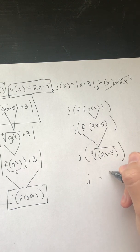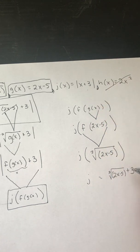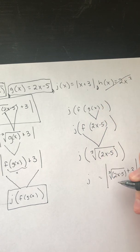it's gonna be third root 2x minus 5, plus 3. See how it replaces it inside of those absolute value bars.